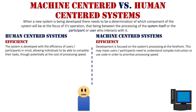On the machine side, development is focused on the system's processing at the forefront. This may mean that users and participants need to understand complex instructions or use code in order to prioritize processing speed. It's all about the system — humans serve the system, putting things into it, whether it be tedious or hard, so the system can process as efficiently as possible.